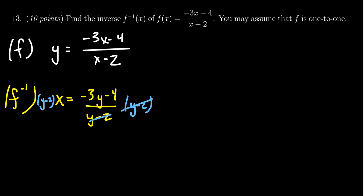That cancels on the left-hand side, and then on the right-hand side, we get x times y minus 2. I'm going to go ahead and distribute that x there, so we get xy minus 2x, and then that's going to equal the left-hand side, which is now negative 3y minus 4.